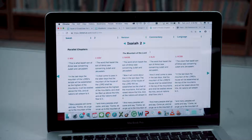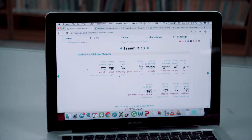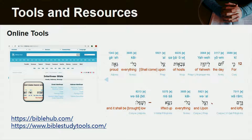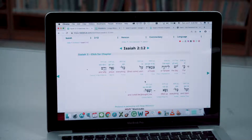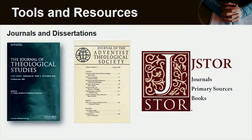Another helpful tool, if you want to know the original words used in the Hebrew for the Old Testament, is also BibleHub.com. You just type 'interlinear' and the verse you want to see — in this case Isaiah 2, verse 12. We can see all the words in the original Hebrew language, the tentative translation below in English, and also how to pronounce those words in the original Hebrew. There is also a Strong's concordance number on top, so you can explore that word and look at the original meaning from the Hebrew. There's also one more helpful resource: scholarly journals available online, written by theologians who did research on many topics about the Bible.